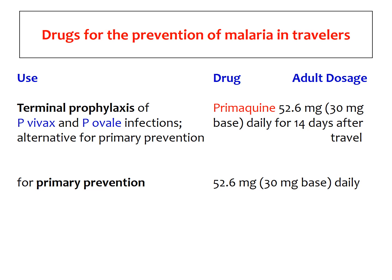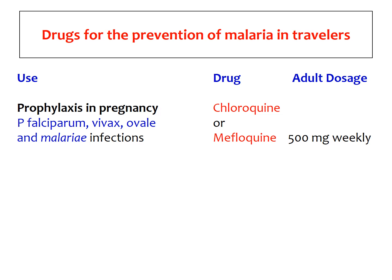For primary prevention, the same dose of 30 mg base is given daily for as long as the person is residing in that area. Regarding prophylaxis in pregnancy for all types of malaria — falciparum, vivax, ovale — we generally give chloroquine or mefloquine in respective doses. These are all common short answer, viva, and MCQ topics, so you must remember all these clinical conditions and which particular drugs are useful. The first part covered treatment; here we are discussing prevention.